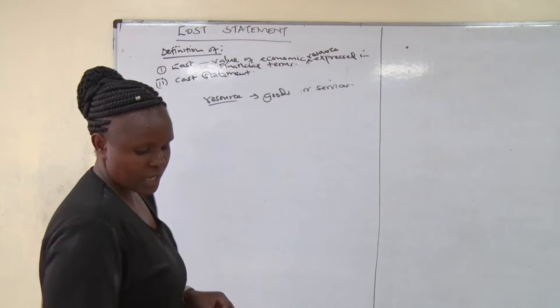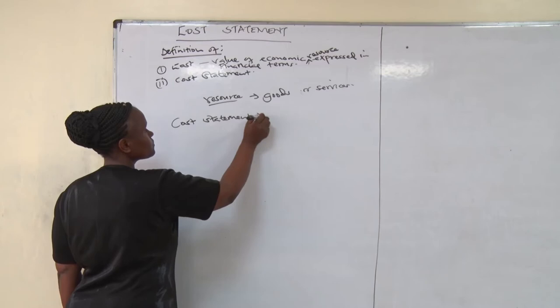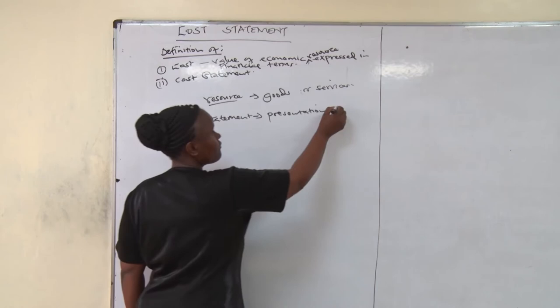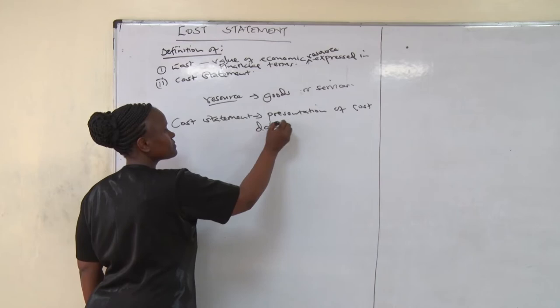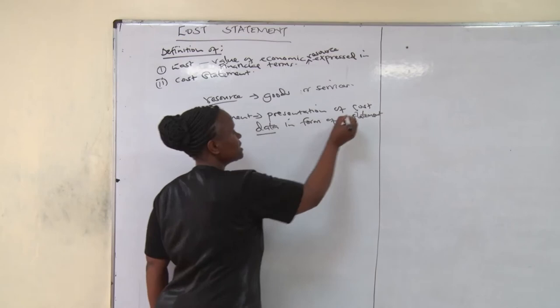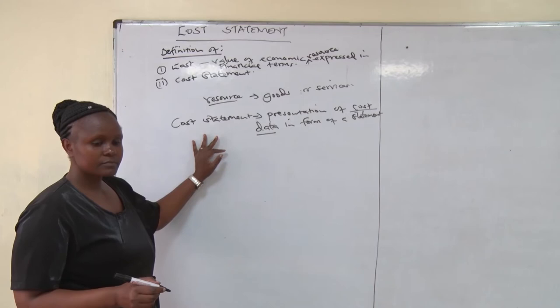I would like us to look at the definition of cost statement. A cost statement is a presentation of cost data in the form of a statement. The information about cost — you present it in the form of a statement. That is a cost statement.